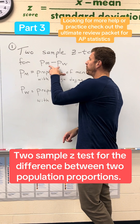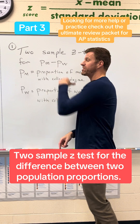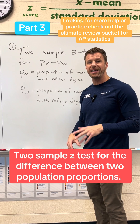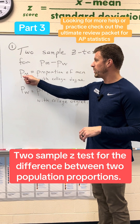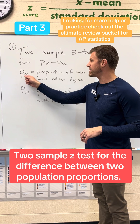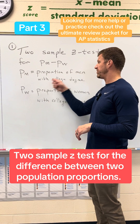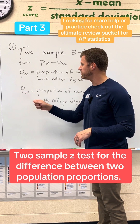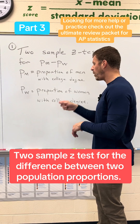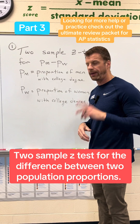It's super important that when you use symbols in significance tests, you define what those symbols represent. So we do have to make sure that we write down that P sub M is the proportion of men with a college degree, and P sub W is the proportion of women with a college degree.